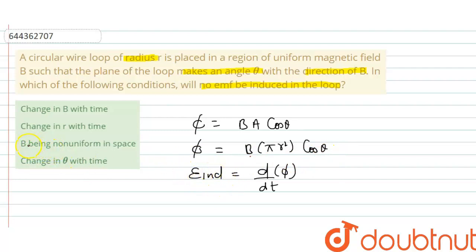But in this case, B being non-uniform in space. So if B is non-uniform but not changing with time, then in that case, there will be no induced EMF.